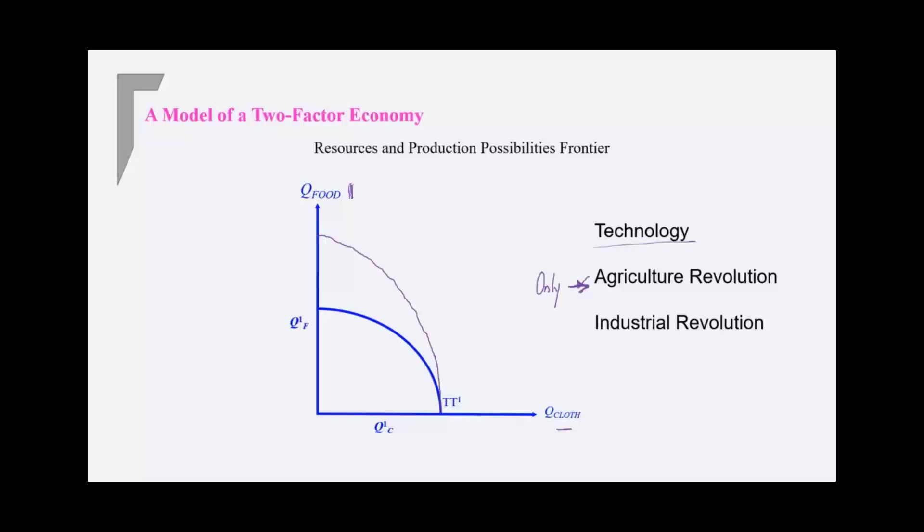And if there is industrial revolution, technology has improved only in the cloth sector, in the manufacturing sector, not in the agricultural sector, then you would see an expansion of your production possibility frontier on the cloth side, and the food side would stay the same.